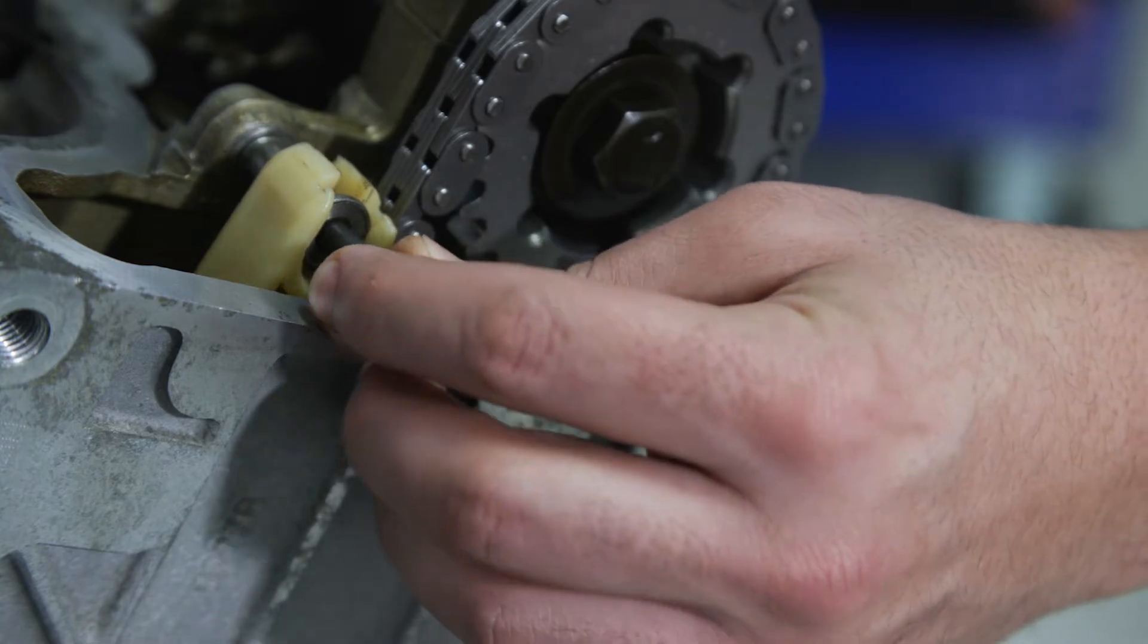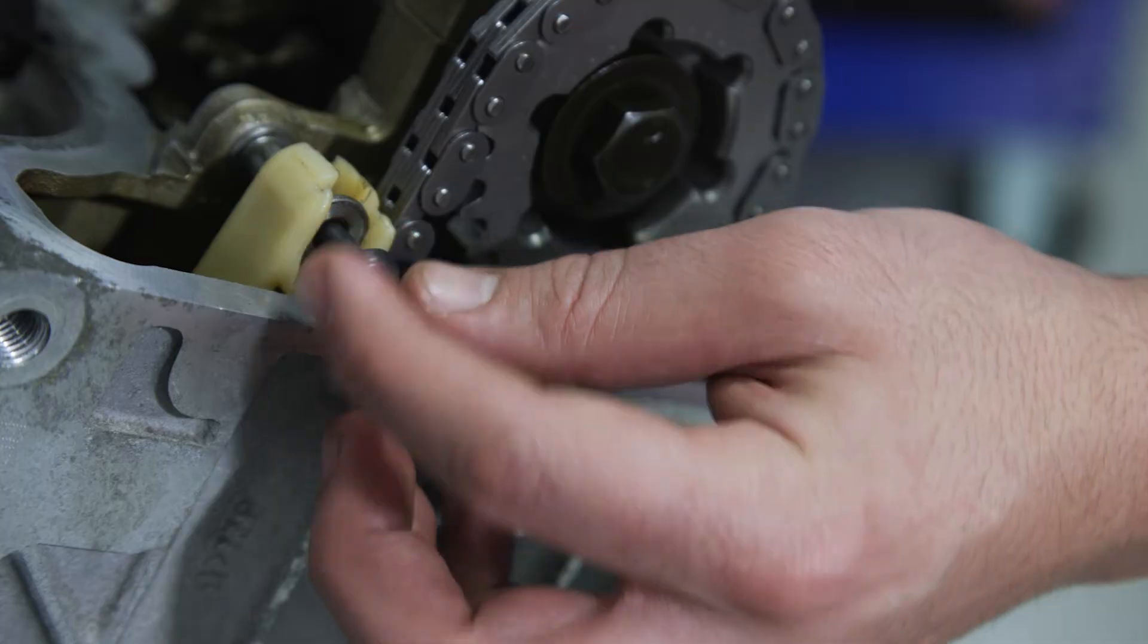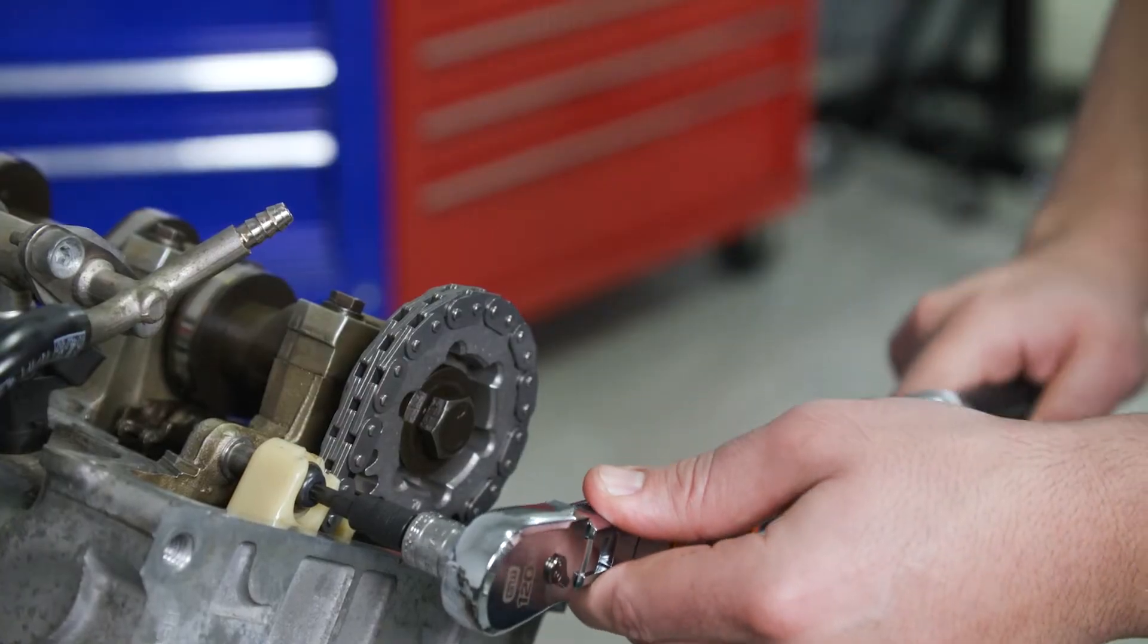Now install the upper guide bolt, making sure it fits properly in the slot. Torque to 9 foot-pounds.